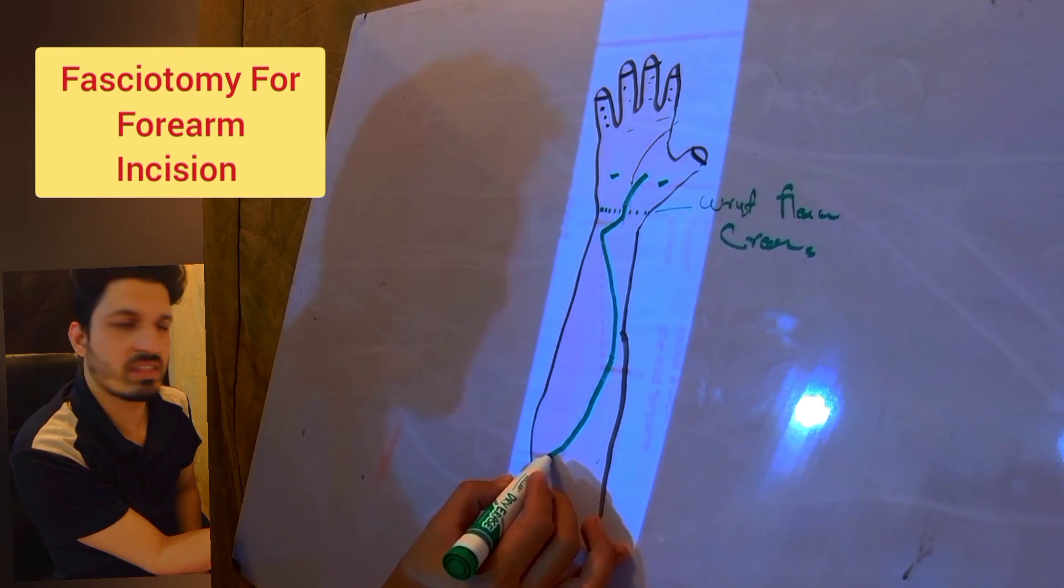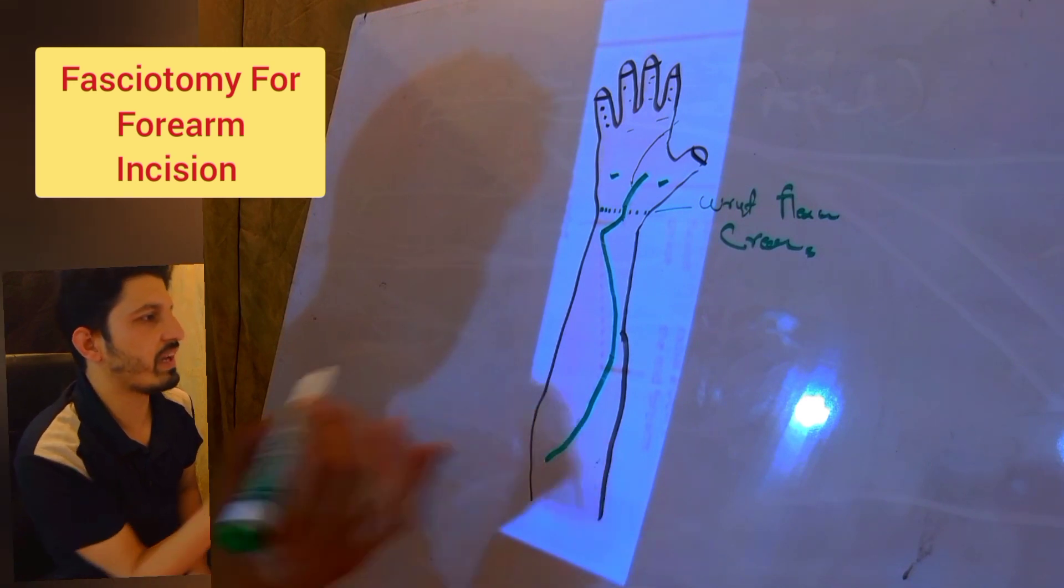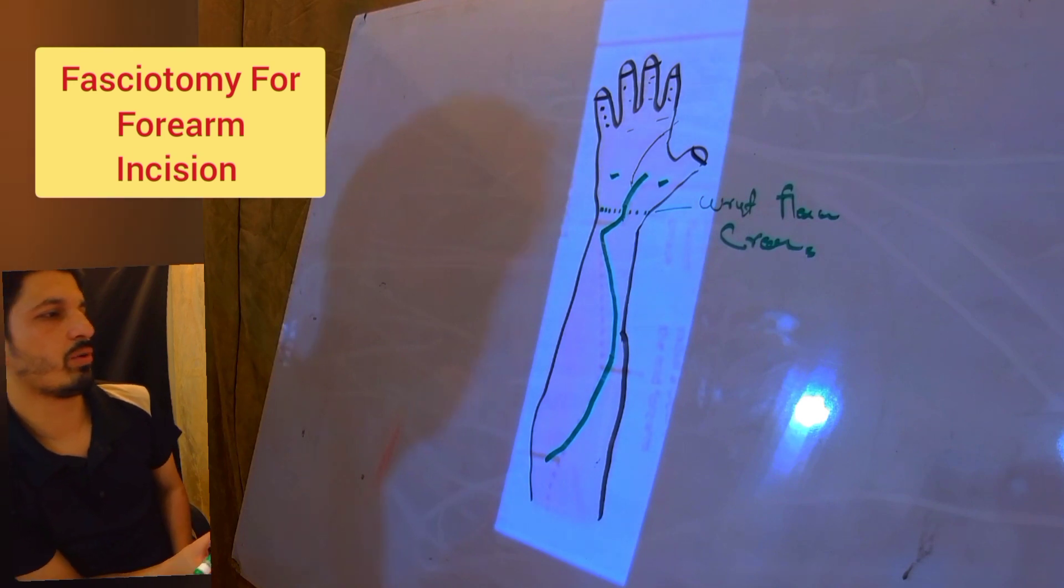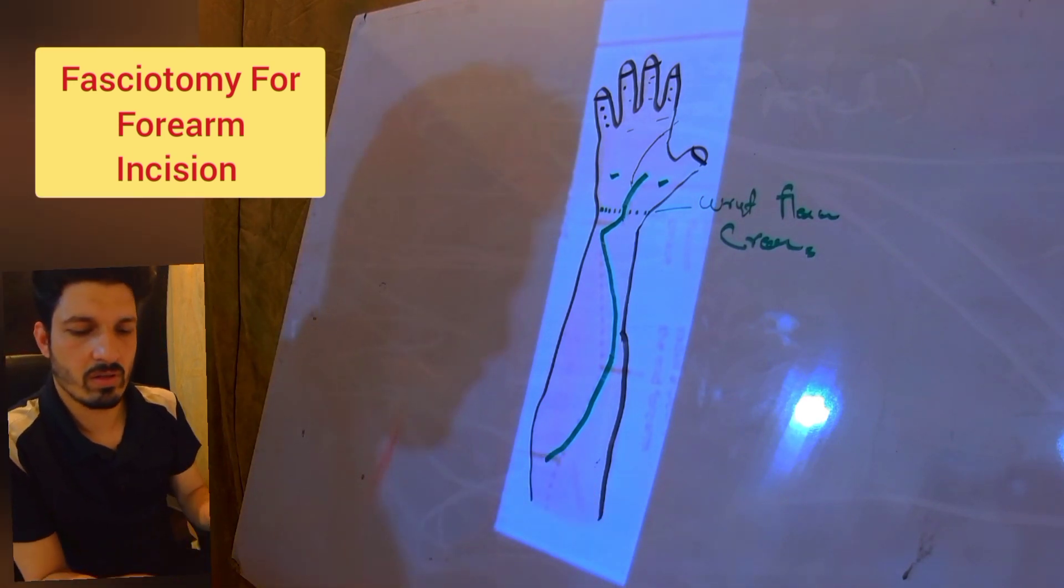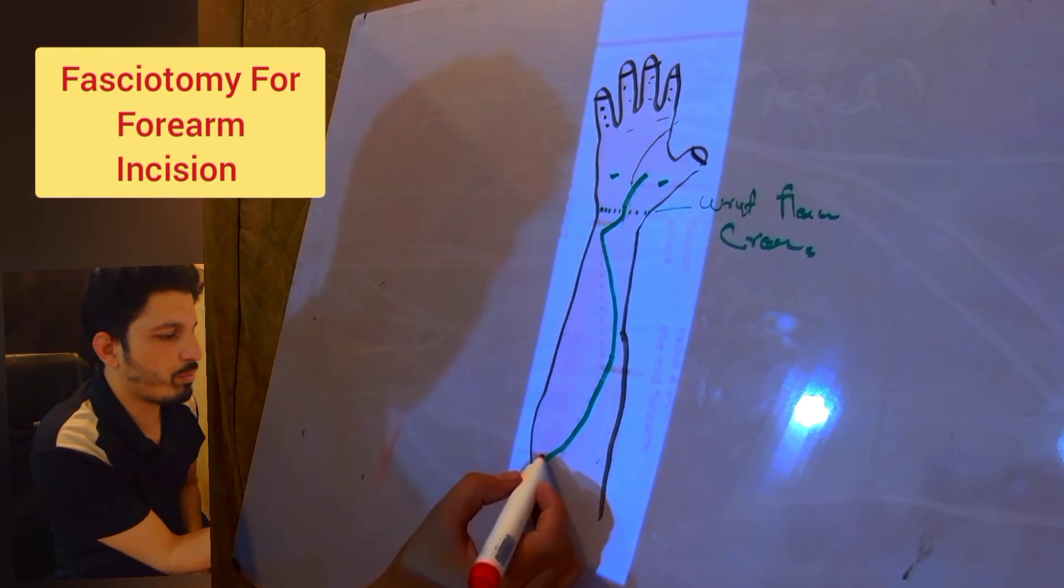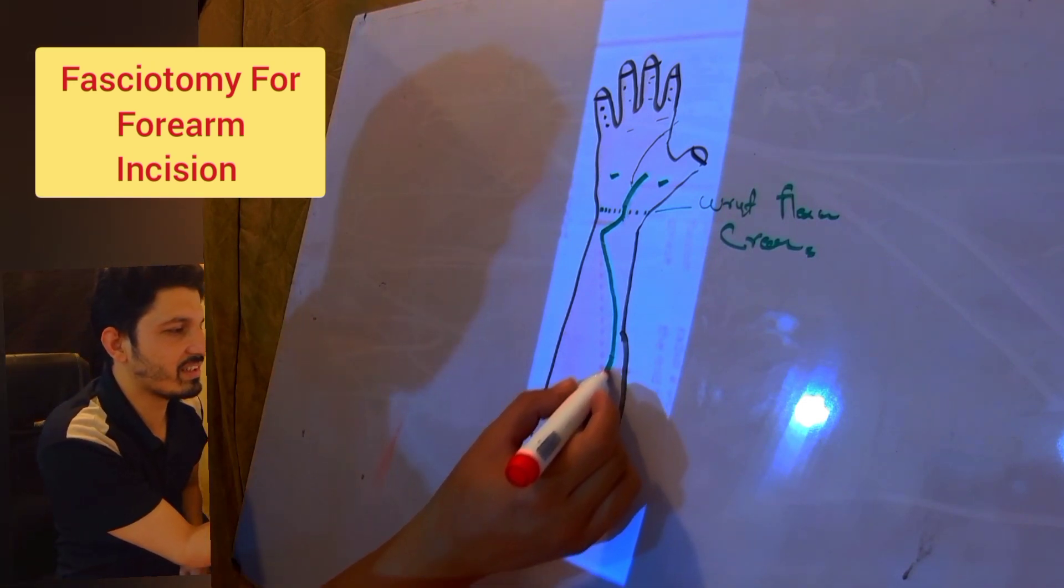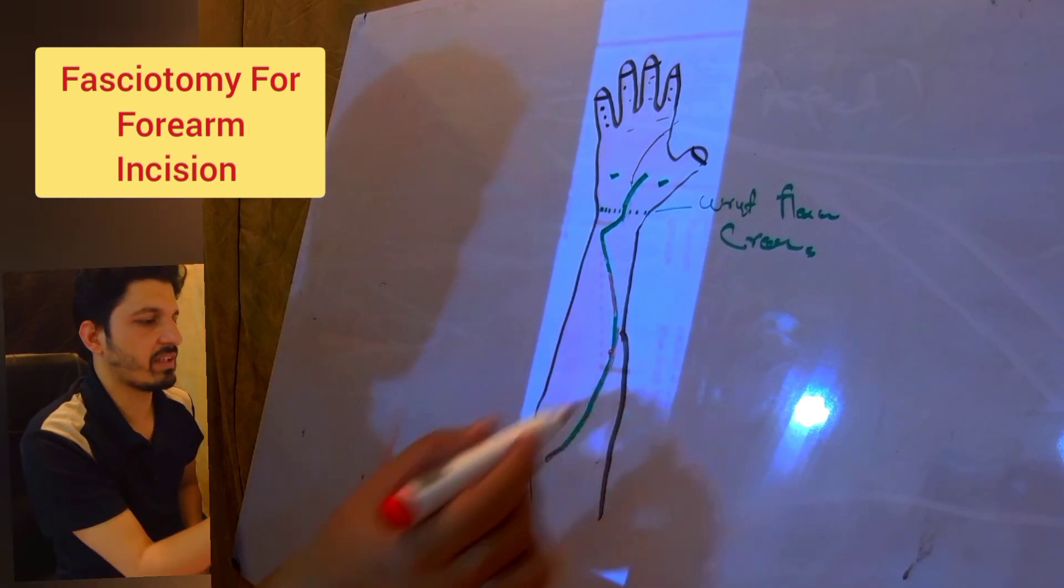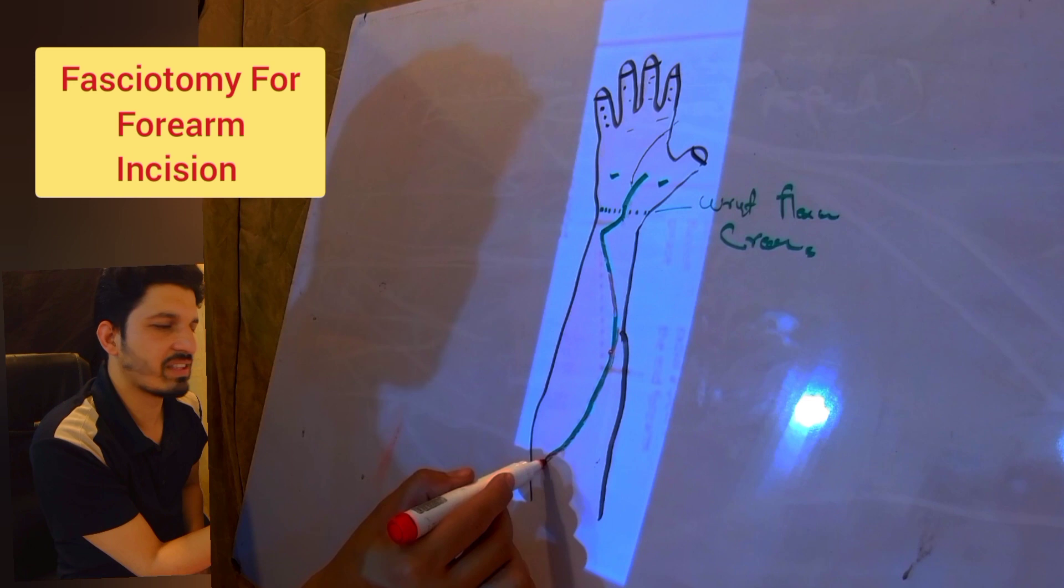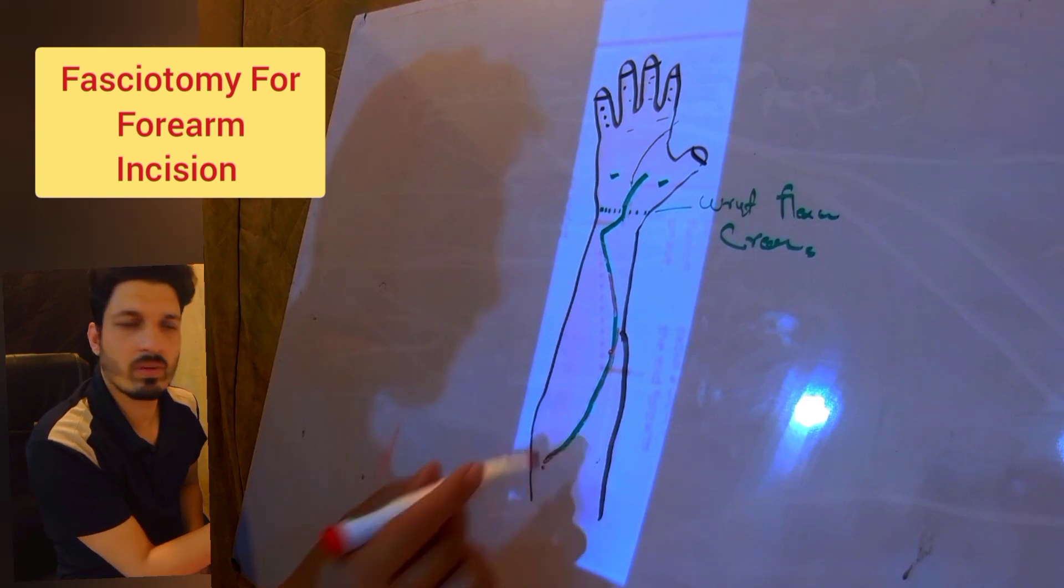So this is your incision. Hope you have understood this incision. In the mid, it is located on the radial aspect. In the distal aspect, it is located distally, and it starts from the ulnar and ends at the ulnar aspect in the arm.